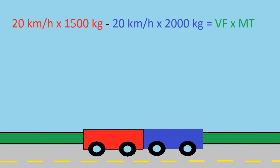To complete this problem, we have to plug our numbers into a formula. That formula is the velocity of object 1 times the mass of object 1 minus the velocity of object 2 times the mass of object 2. This is equal to the velocity final times the mass total.